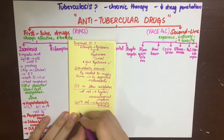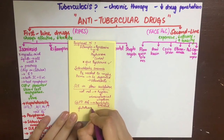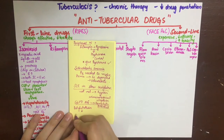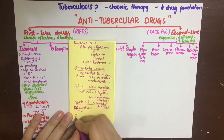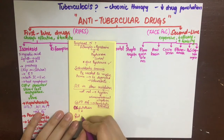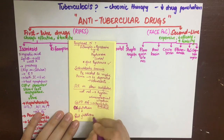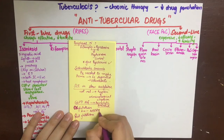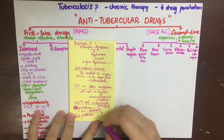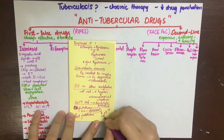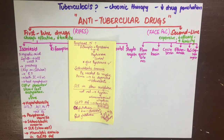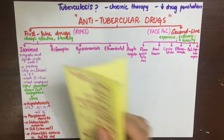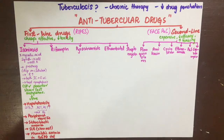Glutathione is a tripeptide antioxidant. After dealing with oxidative stress, it must be reduced back to its active form using NADPH, which comes from G6PD in the pentose phosphate pathway. In G6PD-deficient patients, glutathione cannot be converted to its reduced form, so oxidative stress is unresolved, causing hemolytic anemia. RBCs are more susceptible because they lack mitochondria and have no other source of reducing power apart from glutathione.